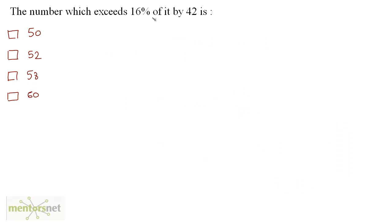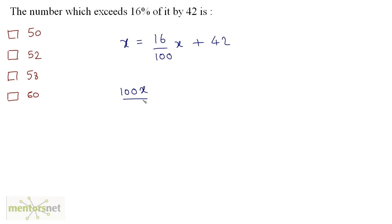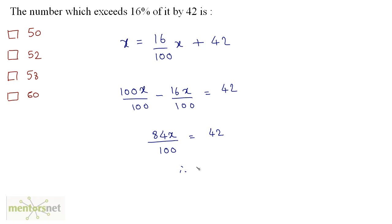The number which exceeds 16% of it by 42 is? Let this number be x. This number equals 16% of it plus 42, so x equals 16 upon 100 times x plus 42. Writing x as 100x upon 100 and moving 16x upon 100 to the left gives 84x upon 100 equals 42. Therefore x equals 42 times 100 by 84, and since 42 times 2 is 84, x equals 100 divided by 2, which is 50.